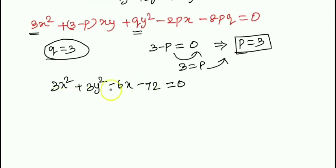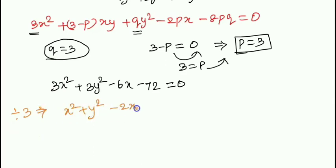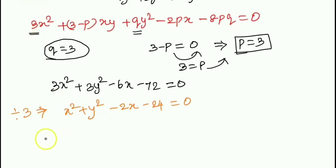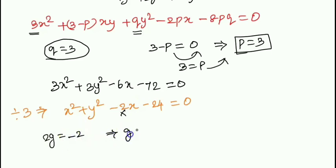This is the general equation. Dividing both sides by 3, we get x squared plus y squared minus 2x minus 24 equals 0. Comparing with the general equation, the x coefficient gives 2g, and 2g equals minus 2, so g equals minus 1.